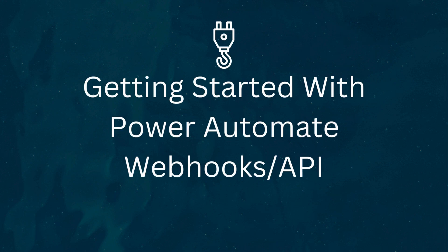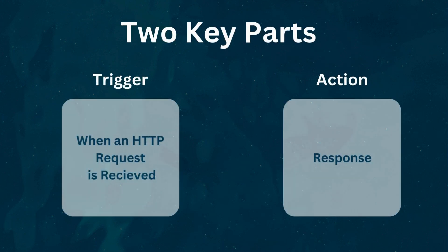Recently, I got to use Power Automate's webhook feature, and I was blown away at how comprehensive it was with just the two simple parts it gives you. Let's take a look. There are two key parts you need to know when getting started: the trigger — 'when an HTTP request is received' — which is the webhook trigger, and one action block used in conjunction with it called Response.